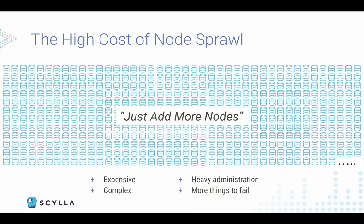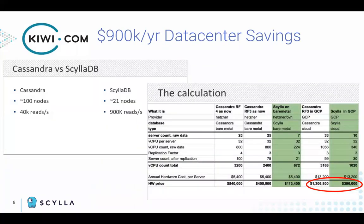Let's look at how another user of Scylla solved the node sprawl issue. As we have seen, node sprawl is hurting users implementing their system on Cassandra. Kiwi, which is an online travel retailer and aggregator, was a good example. Initially using bare metal servers and later using Google Compute Platform for Scylla deployments, the usage of Scylla saved Kiwi over 60% in hardware cost. As you can see, Kiwi's expenditure on servers was almost quadruple versus the Scylla ones.